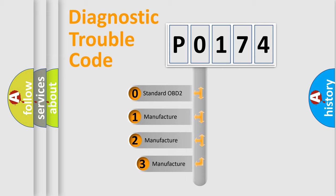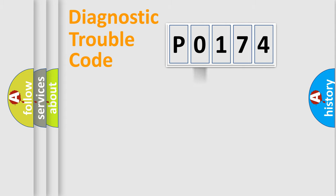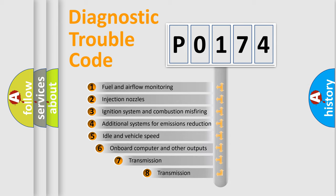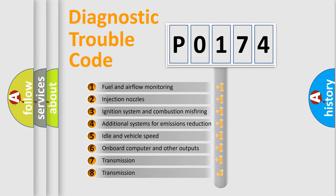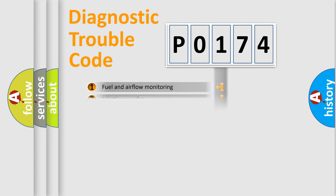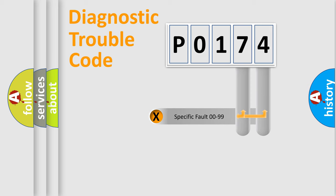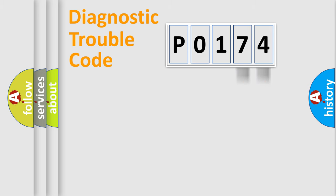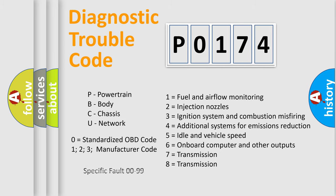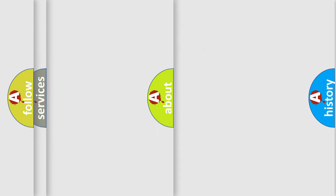If the second character is expressed as 0, it is a standardized error. In the case of numbers 1, 2, or 3, it is a more specific expression of a car-specific error. The third character specifies a subset of errors. This distribution is valid only for the standardized DTC code, where the second character is expressed by the number 0. Only the last two characters define the specific fault of the group.